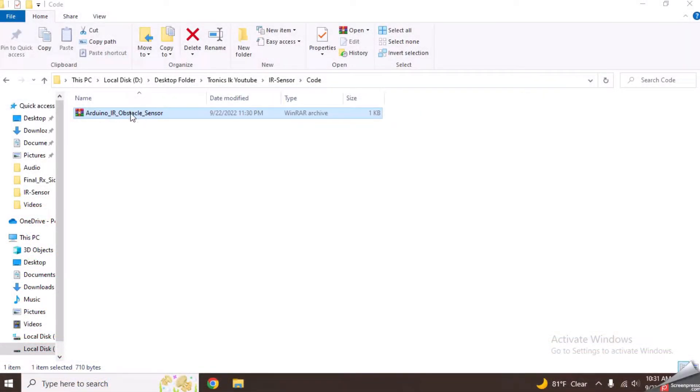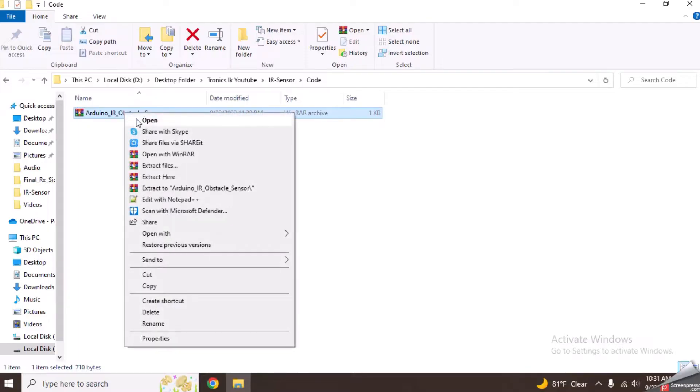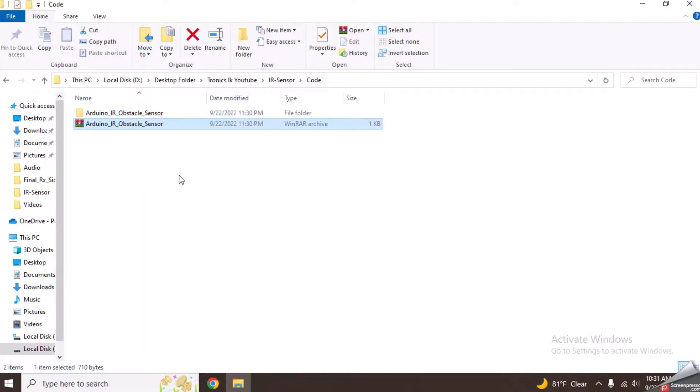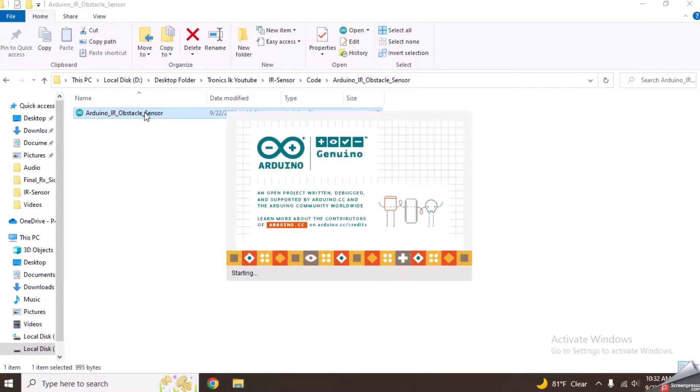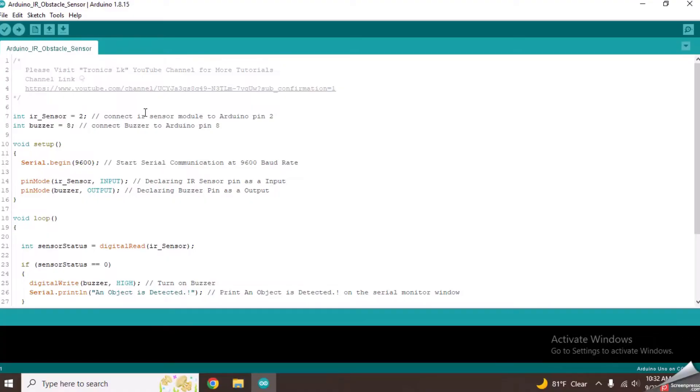Now, download and open this code named Arduino IR Obstacle Sensor. In the first two lines, it has declared the pins which IR sensor and buzzer have connected.